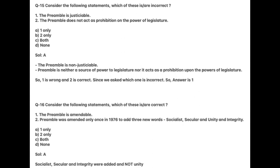Consider the following statements. Which of these are correct? One: The Preamble is amendable. Two: The Preamble was amended only once in 1976 to add three new words — Socialist, Secular, Unity, and Integrity. Answer is A. The Preamble is amendable, but Socialist, Secular, and Integrity were added — not Unity, which was already present.